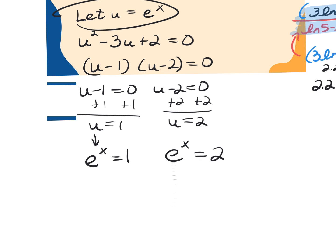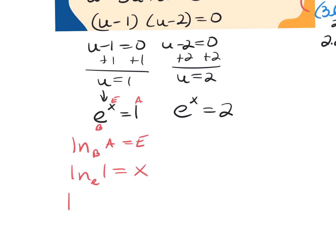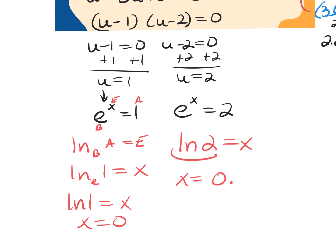I can't solve it in exponential form, so I convert to natural log because the base is E. Using the BAE method: LN of 1 equals X gives X equals 0. For the second equation, LN of 2 equals X — just hit the LN button and then 2. You should get X equals 0.693.